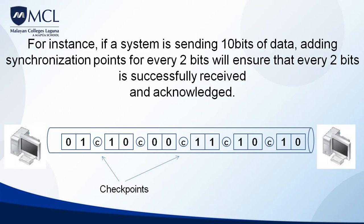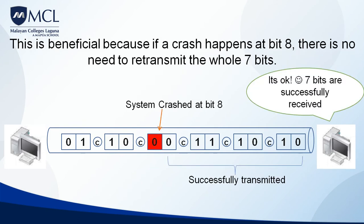For instance, if a system is sending 10 bits of data, adding synchronization points for every 2 bits will ensure that every 2 bits are successfully received and acknowledged. This is very beneficial because if a crash happens at bit 8, you don't need to retransmit the whole 7 bits since you're sure the first 7 bits were transmitted successfully.